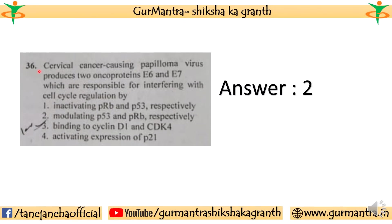The 36th question: Cervical cancer-causing papilloma virus produces two oncoproteins, E6 and E7, which are responsible for interfering with cell cycle regulation. The correct answer for this question is the second one — modulating P53 and P-retinoblastoma respectively.